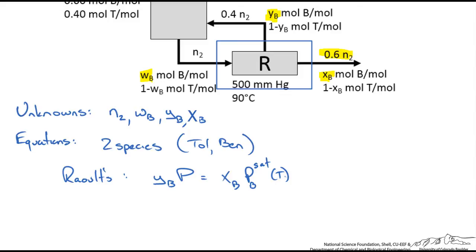We could write the same thing for the other species in terms of the benzene variables. 1 minus YB times the total pressure equals 1 minus XB times P sat of toluene at the same temperature. We need to look up the vapor pressure of toluene and benzene at the 90 degrees that we have at the reboiler.